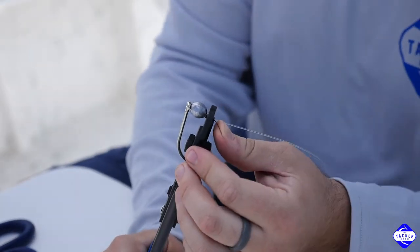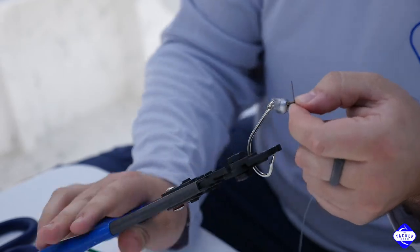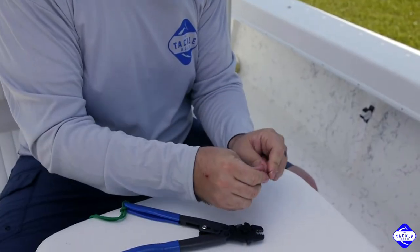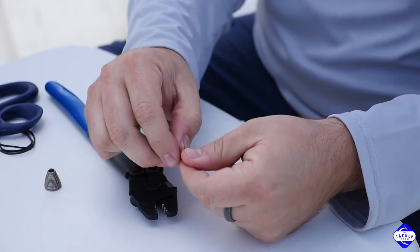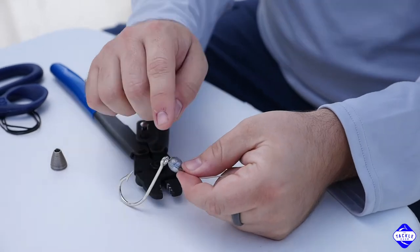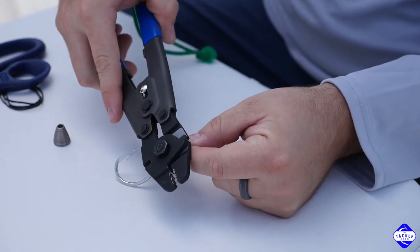Next, take that wire and bend it right up to a 90 degree angle. Now, I like my wire a little bit shorter than that, so I'm going to trim off just a little bit.